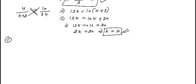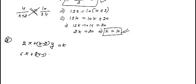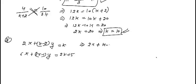Another question of the same infinite-solution category. The first equation is 2X plus (K minus 2)Y equals K, and the second equation is 6X plus (2K minus 1)Y equals 2K plus 5. Writing in standard form: 2X plus (K minus 2)Y minus K equals 0, and 6X plus (2K minus 1)Y minus (2K plus 5) equals 0.